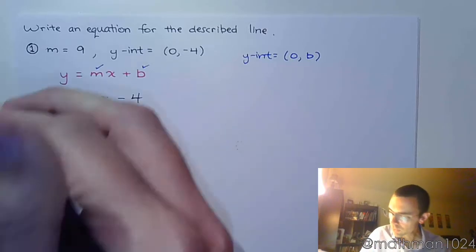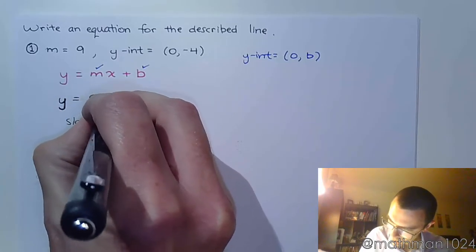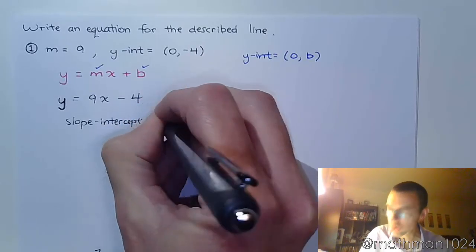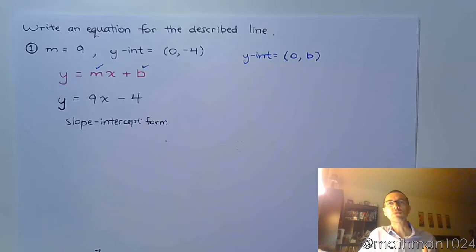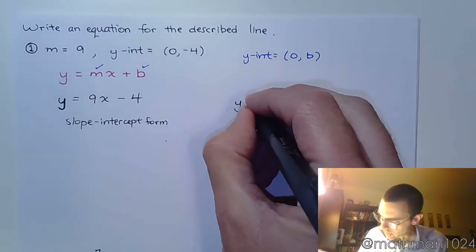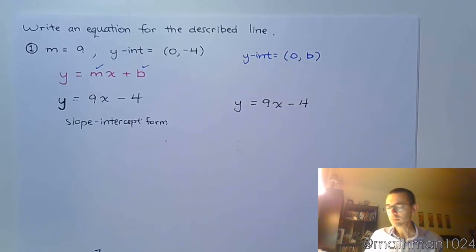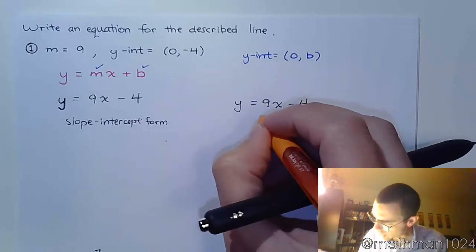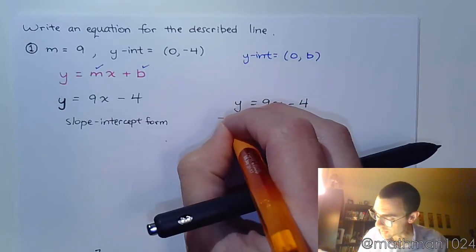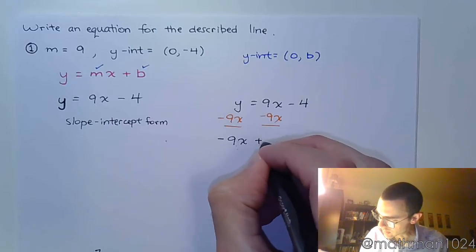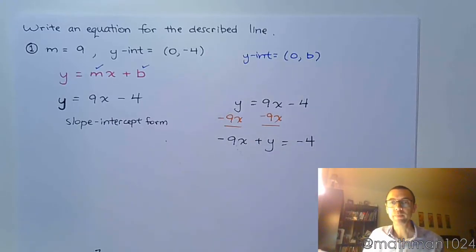This is good for being in slope-intercept form, but what you're going to find out is that sometimes the problem wants you to write your answer in standard form. Remember, standard form means you have both the x and the y on the same side and your constants on the other side. So let's rewrite that over here. So y is equal to 9x minus 4. To put it in standard form, we need to move this x to the other side. So let's subtract 9x. And we have negative 9x plus y equals negative 4.